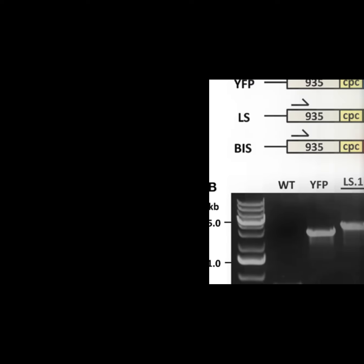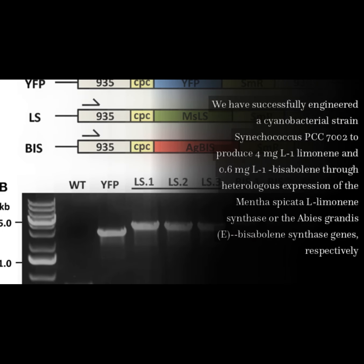We have successfully engineered a cyanobacterial strain Sinococcus PCC 7002 to produce 4 mg/L limonene and 0.6 mg/L bisabolene through heterologous expression of the Mentha spicata L-limonene synthase or the Abies grandis E-bisabolene synthase genes, respectively.